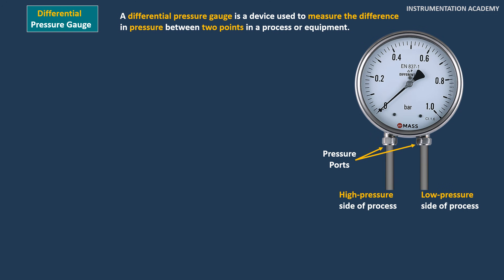In some cases, one port may be left open to the atmosphere, especially when measuring the pressure difference between the equipment and atmospheric pressure, such as in air filtration or venting applications.